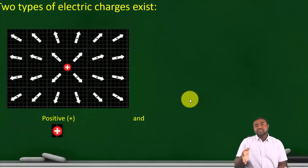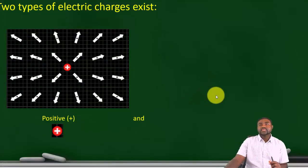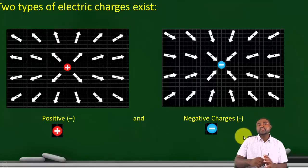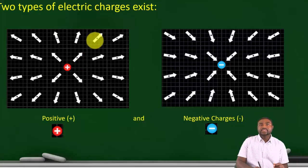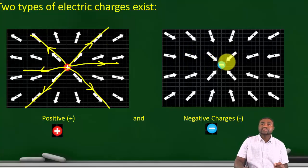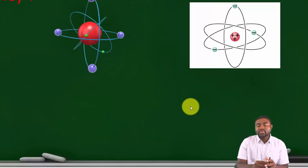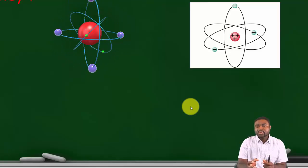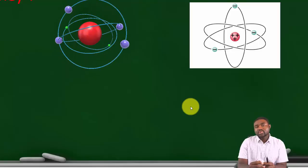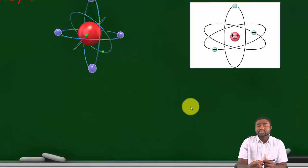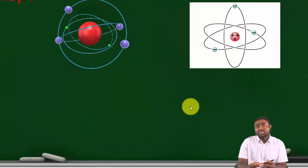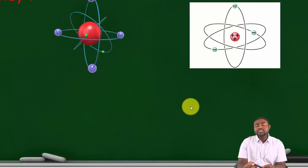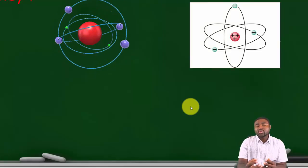There are two types of charges: positive charges and negative charges. Field lines emanate from a positive charge and terminate on a negative charge. Where do these charges come from? Matter — you and I, books, pens, desks, computers, cameras — everything is composed of atoms.